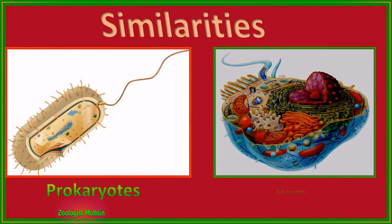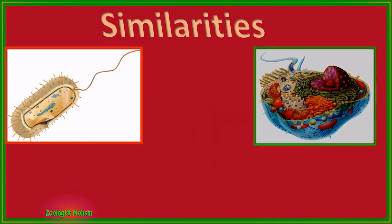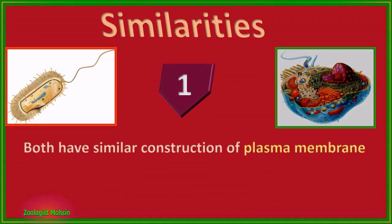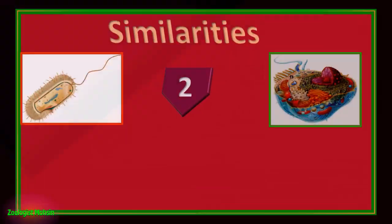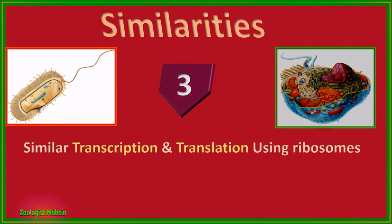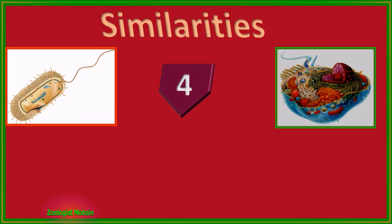Similarities — Prokaryotes vs. Eukaryotes. Number one: both cells have a similar construction of plasma membrane — in both, the plasma membrane is a bilayer of lipids in which protein molecules are sandwiched. Number two: both have the same genetic code information in DNA, like triplet codons for amino acids.